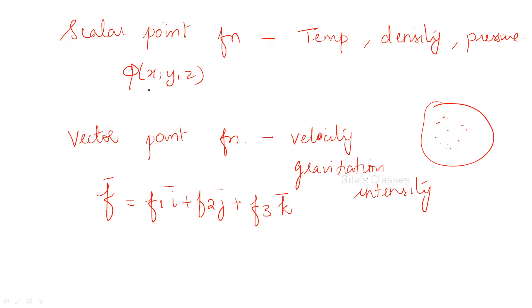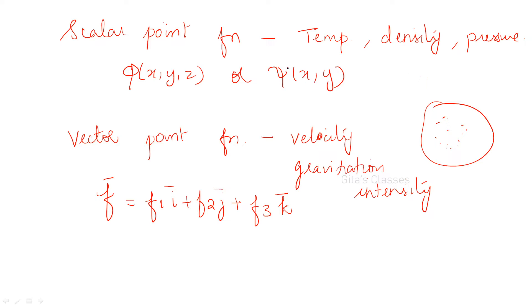Generally we write it as phi of x, y, z. It is denoted by phi(x, y, z). You can also write psi(x, y) for two dimensions, or phi(x, y) as well.